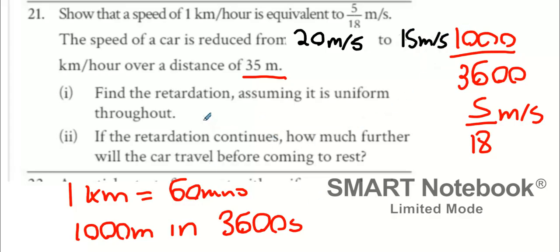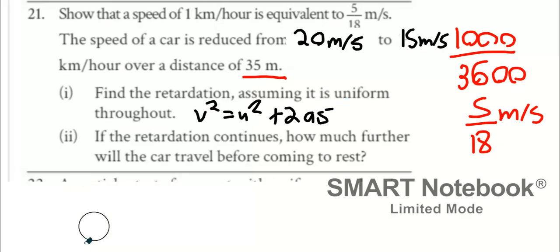Now, I think I'm going to use v squared equals u squared plus 2as. Why am I going to use that one? 15 squared is my u, my v is 20 squared, and my 2a times my acceleration times 35. 2 times 35? 70a.